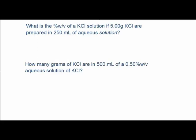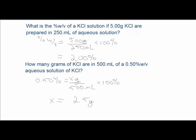Here are two problems to try: what is the percent weight-volume of KCl if 5 grams of KCl are prepared in 250 milliliters of aqueous solution? And how many grams of KCl are in 500 milliliters of a 0.5% weight-volume aqueous solution of KCl? The solutions are identical to the previous problem, because the identity of the solute doesn't matter as long as the masses and volume are the same. In the first, we plug into the definition and solve for the left side; in the second, we solve for the numerator — more of an algebra problem.